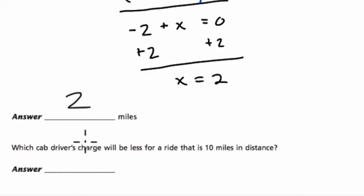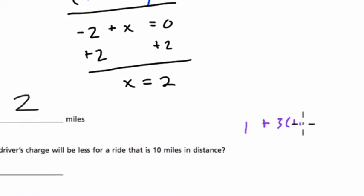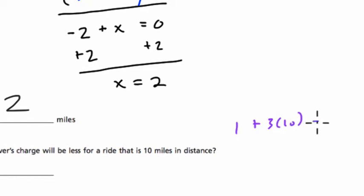Which cab driver's charge will be less for a ride that is 10 miles in distance? So plug 10 into both now. So for Bert, we've got 1 plus 3 times 10, and that's 31. For Madeline, we've got 3 plus 2 times 10, which is 23.